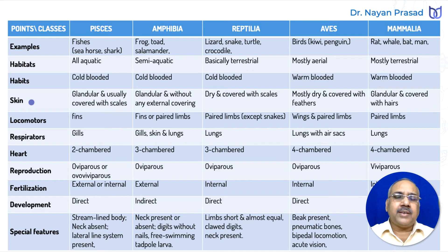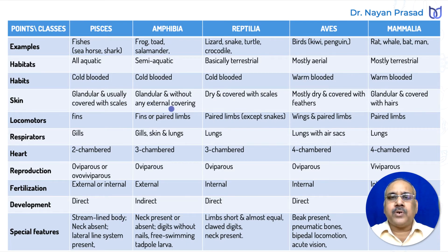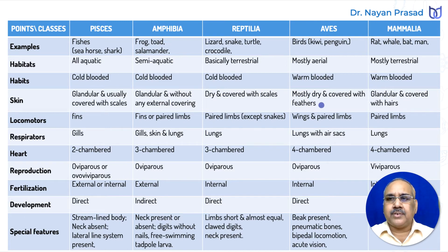They also differ in their skin. Fishes have glandular skin, usually covered with scales. In amphibians, the skin is also glandular, but there is no outer covering — the skin is naked. In reptiles, glands are absent and the skin is completely dry, covered with scales or bony plates. In birds, the skin is mostly dry and covered with feathers. In mammals, the skin is glandular and covered with hairs — the presence of hairs is one of the most characteristic features of mammals.